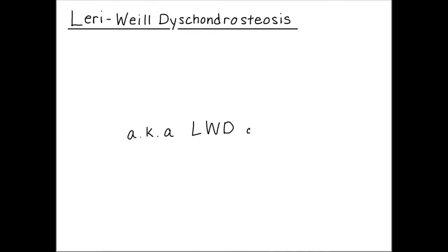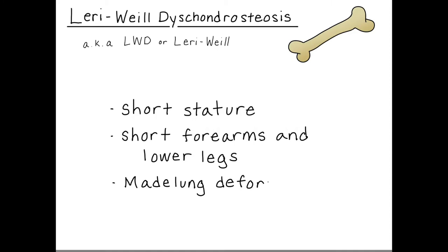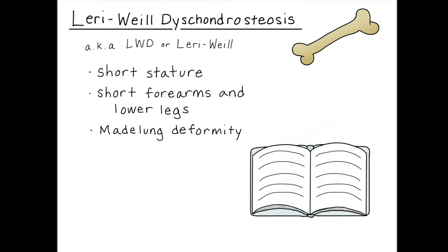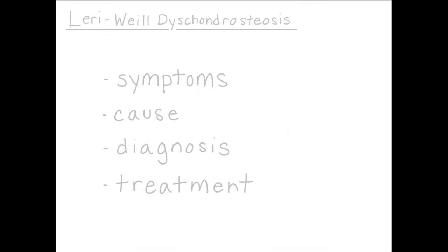Leri-Weill Dyschondrosteosis, sometimes called LWD or just Leri-Weill, is a genetic condition affecting bones, characterized by short stature, short forearms and lower legs, and Madelung deformity of the wrist. Named after Drs. Leri and Weill, the term dyschondrosteosis indicates affected bone development. This lecture discusses the features, causes, diagnosis, and treatment of LWD.